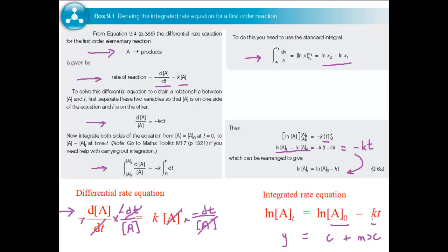This is the case only if the reaction shows first-order kinetics, so it's a useful way of showing that a reaction is first order and allows you to find a value for the rate constant. Box 9.2 shows you how to derive the integrated rate equation for a second-order reaction, and Box 9.6 does the same for a zero-order reaction. In each case, the derivation follows the procedure shown here for a first-order reaction.